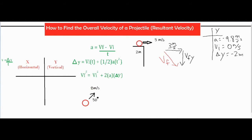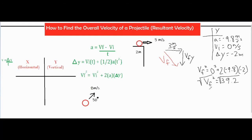Now our job is to find vfy. I can't use the formula that requires time since I don't have t, so I'll use the third kinematic formula to find vfy. After working it out, vfy comes out to 6.26 meters per second — and technically it's negative because it's moving downwards, so it's negative 6.26 meters per second.